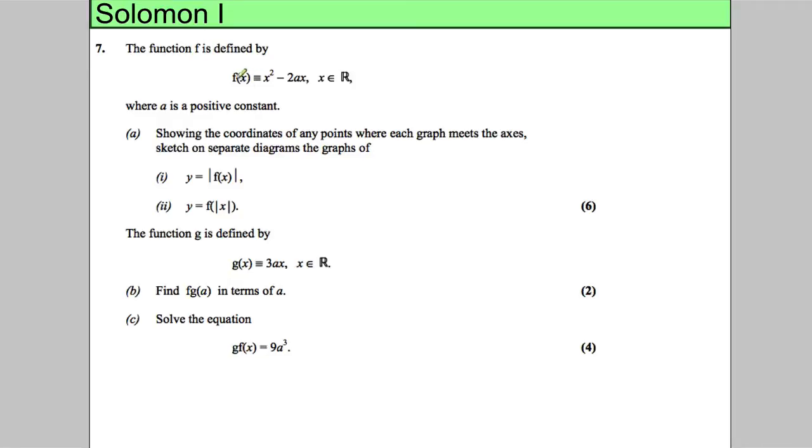In this question we've got a function f(x) = x² - 2ax, where a is a positive constant, it's just a number, and f(x) is clearly a quadratic.